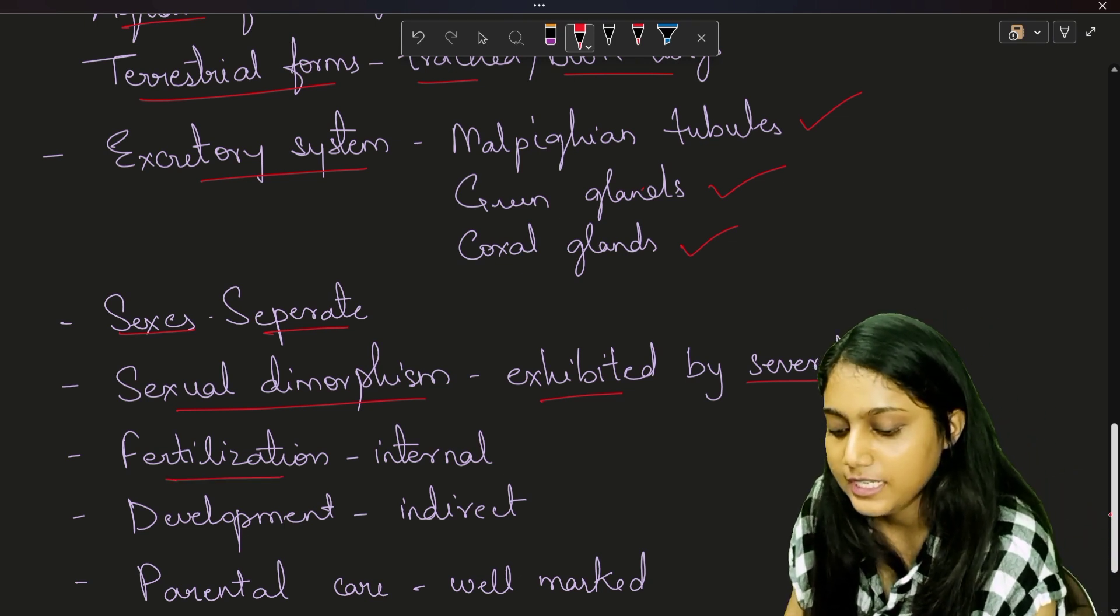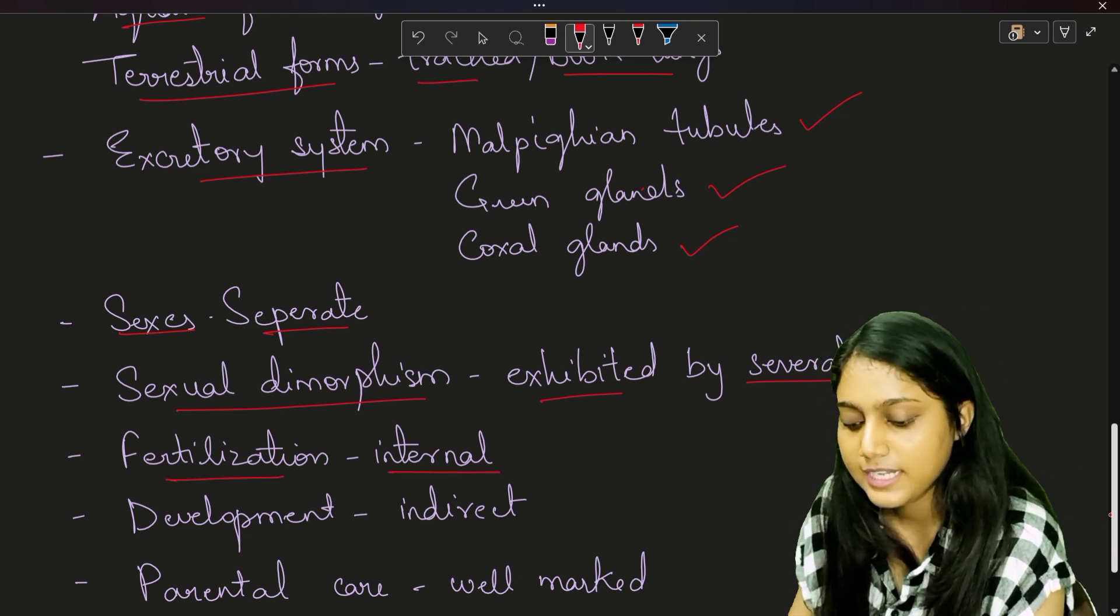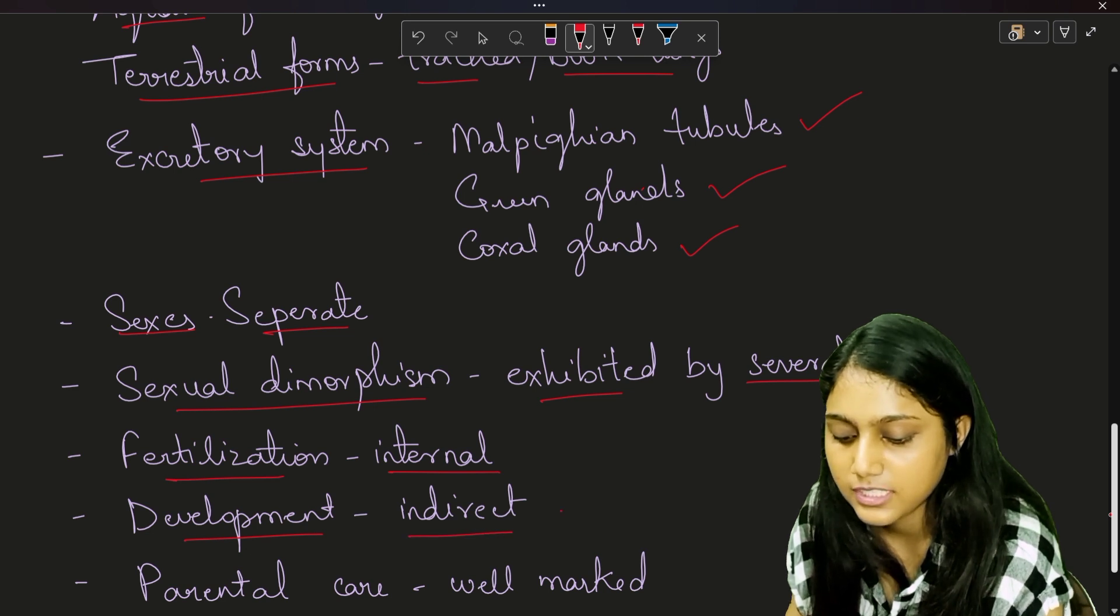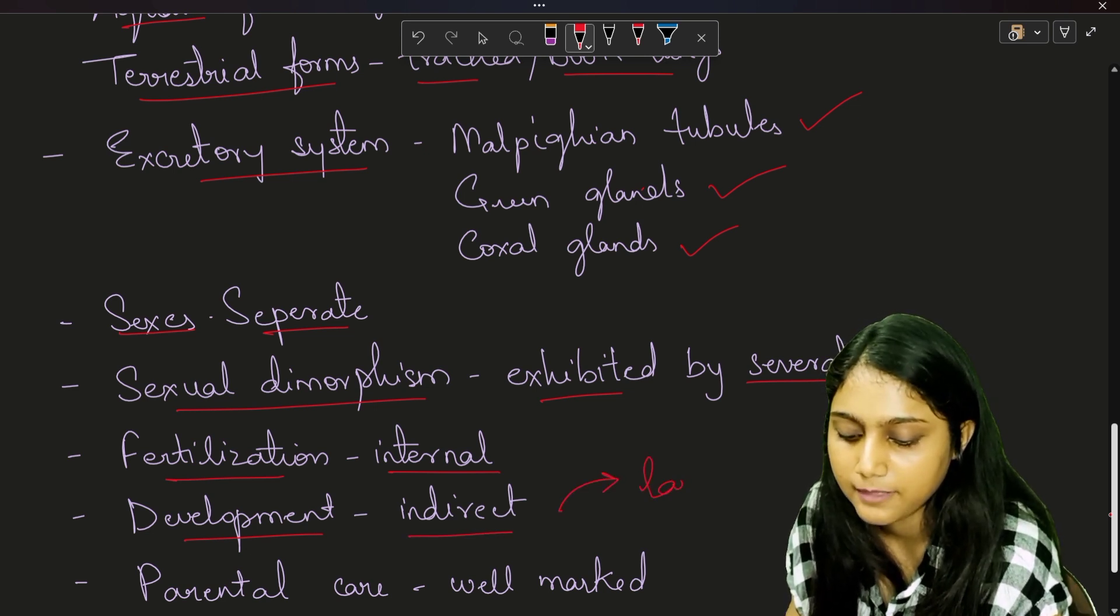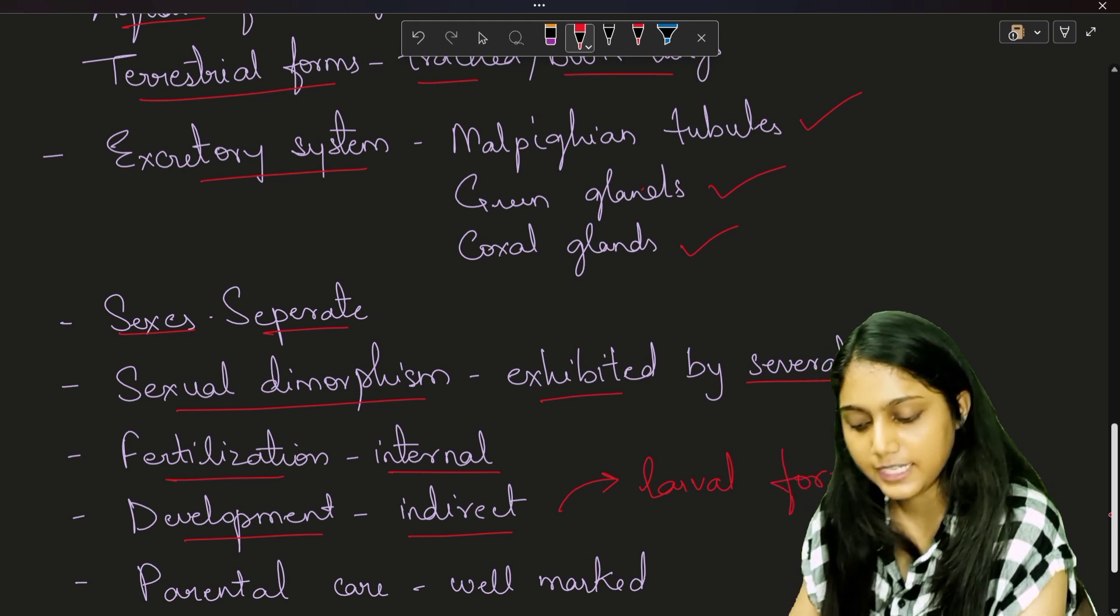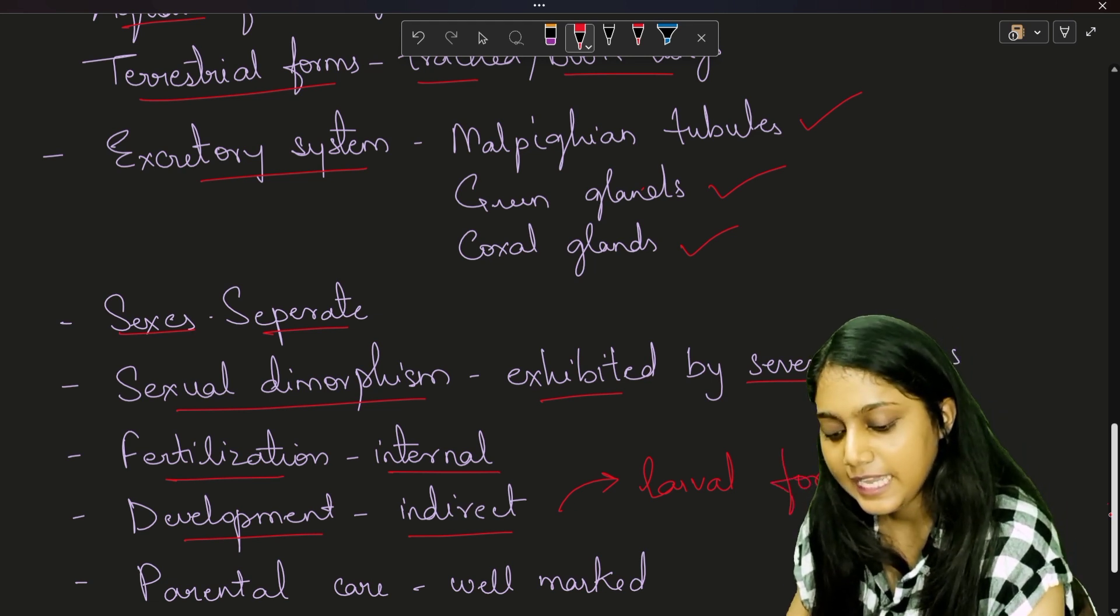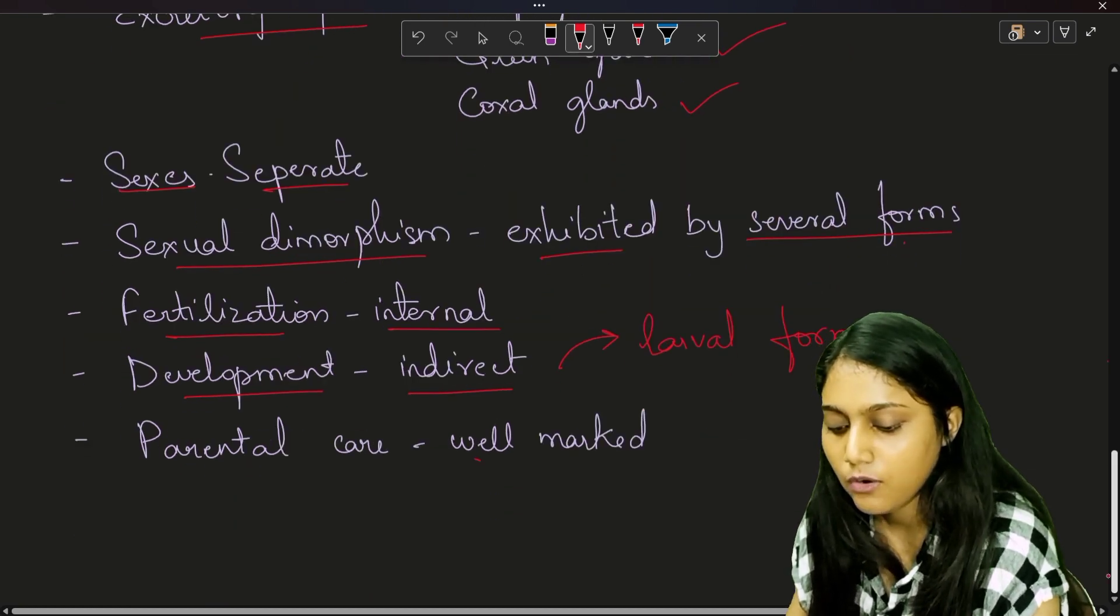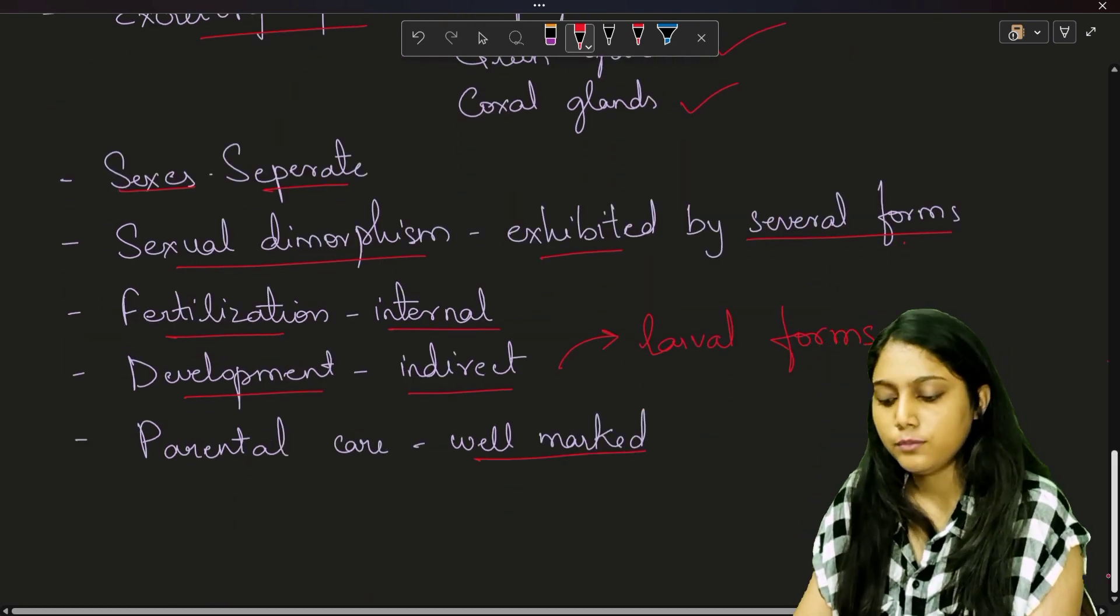Now fertilization will be internal fertilization. Development will be indirect which consists of indirect development, which means larval forms will be present. Now parental care is well marked in the organisms of Phylum Arthropoda.